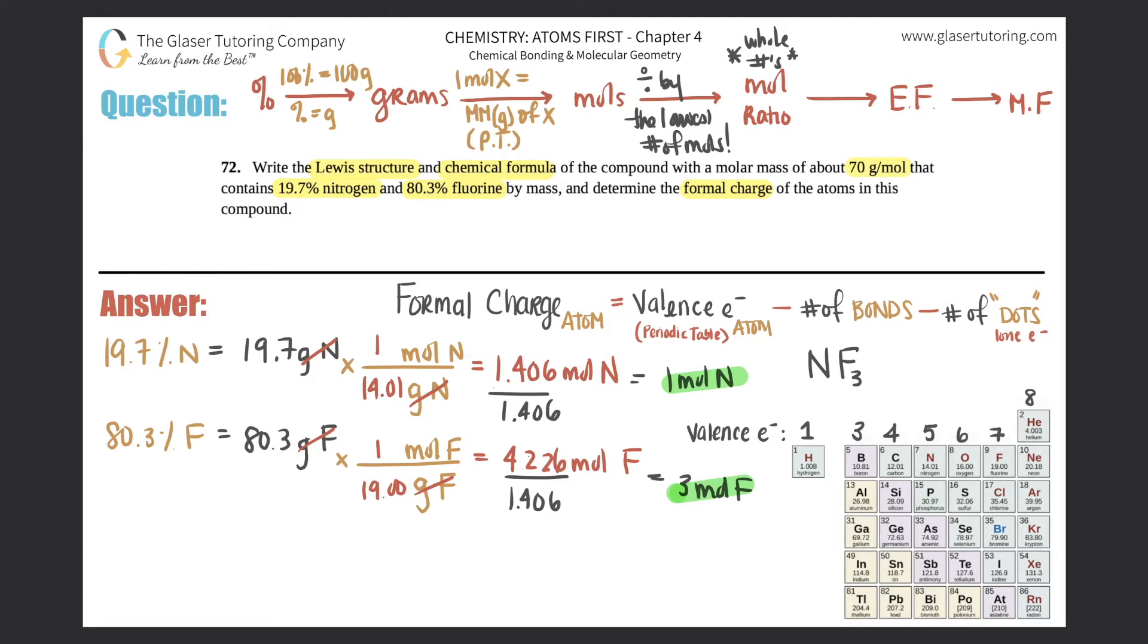Now we just have to see if our empirical formula matches our molecular formula. They told us it had a molar mass of 70 grams. All we're doing is taking our molar mass that they gave us and divide it by the empirical mass, the mass that you found of the compound.